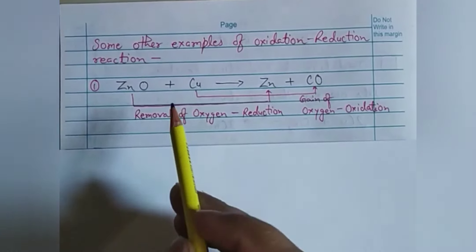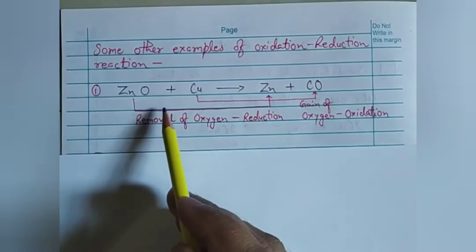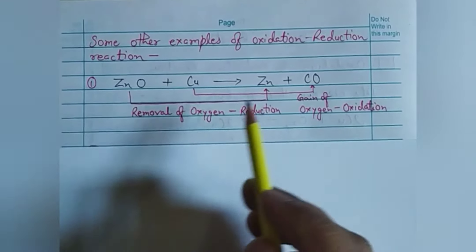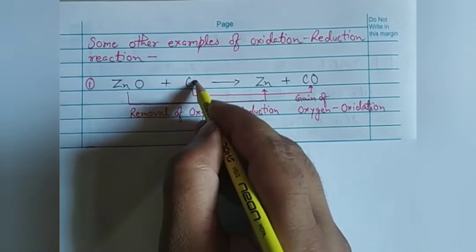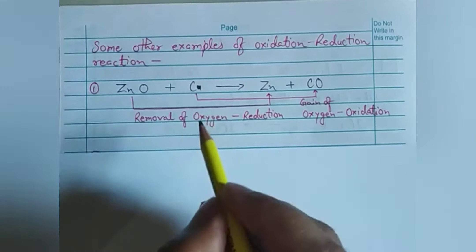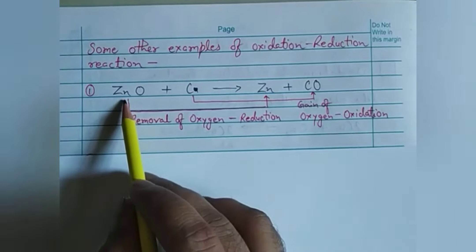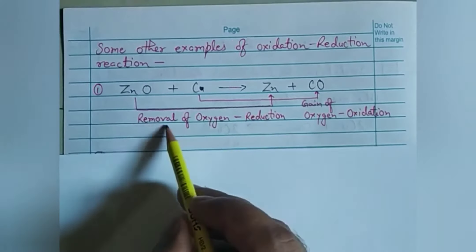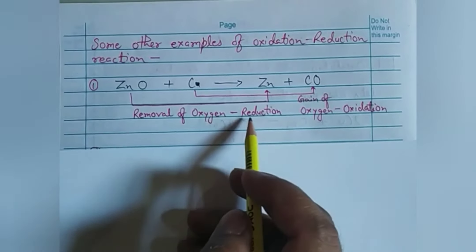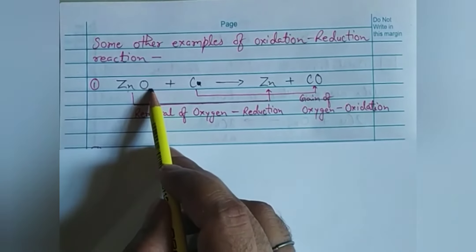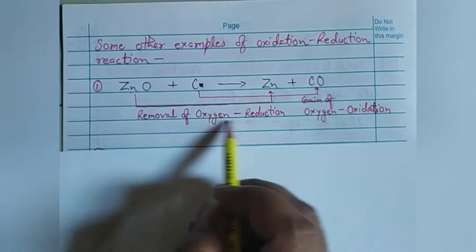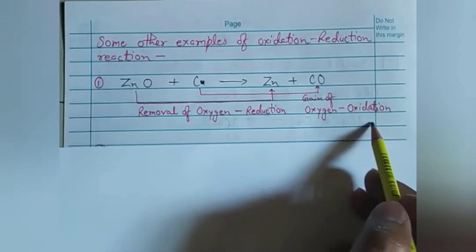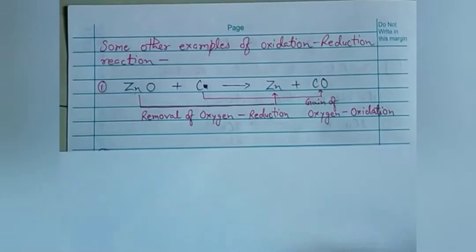Let's look at one more example: zinc oxide reacted with carbon. When carbon is used against zinc oxide, zinc metal is obtained by a reduction process because oxygen is removed from the zinc oxide — so zinc oxide is getting reduced. Meanwhile carbon is gaining the oxygen, so carbon is getting oxidized. This makes it a redox reaction.